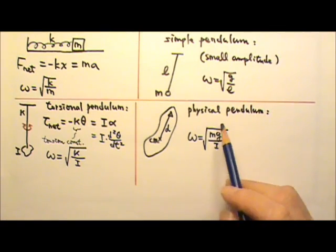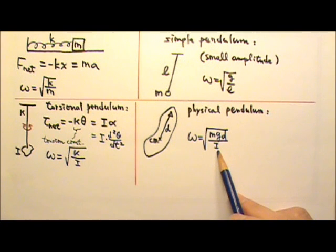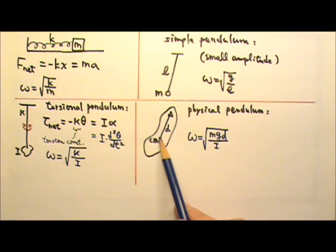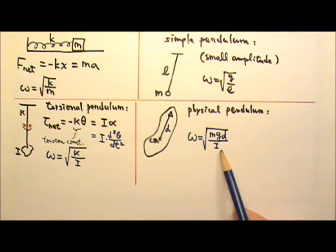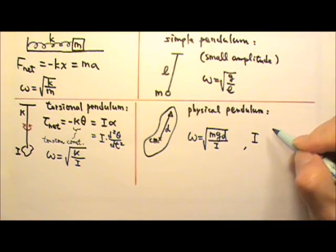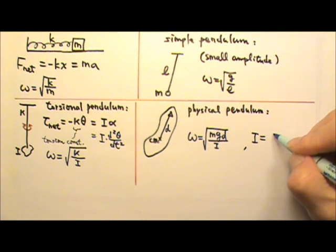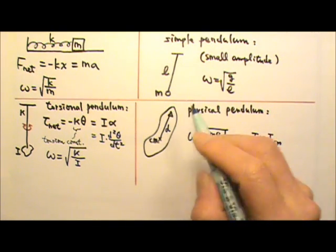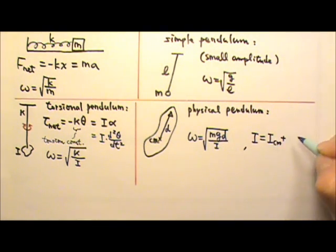So the omega for a physical pendulum is the square root of Mgd over I. And in order for a physical pendulum to oscillate, the axis cannot go through the center of mass. Therefore the I is never the ICM. Which means if the ICM is the rotational inertia that is given, then we have to use parallel axis theorem to shift the axis to the actual axis. So I would be ICM plus Mh squared.